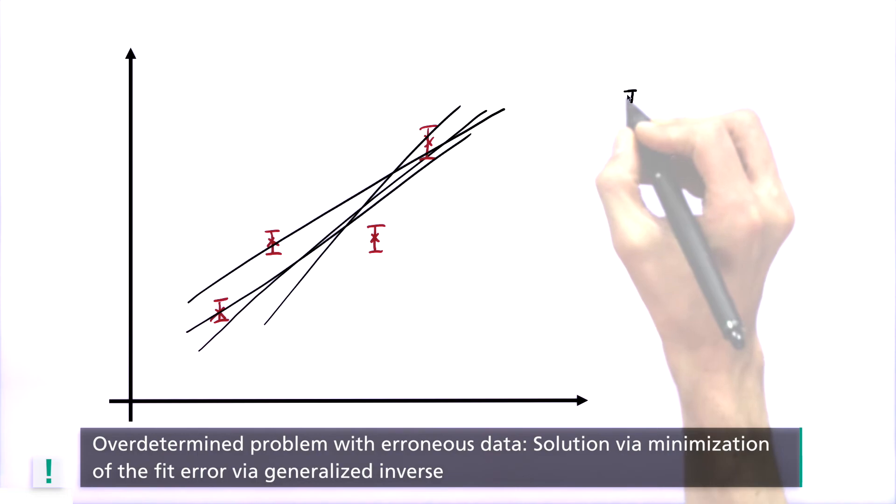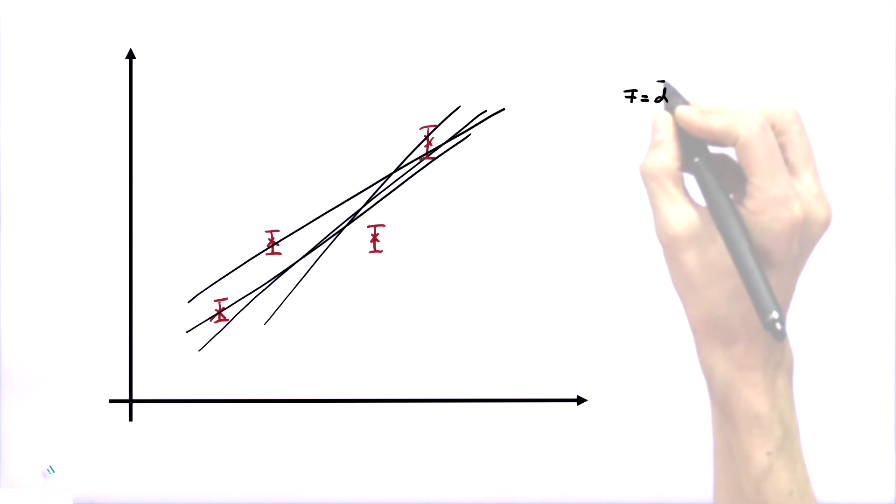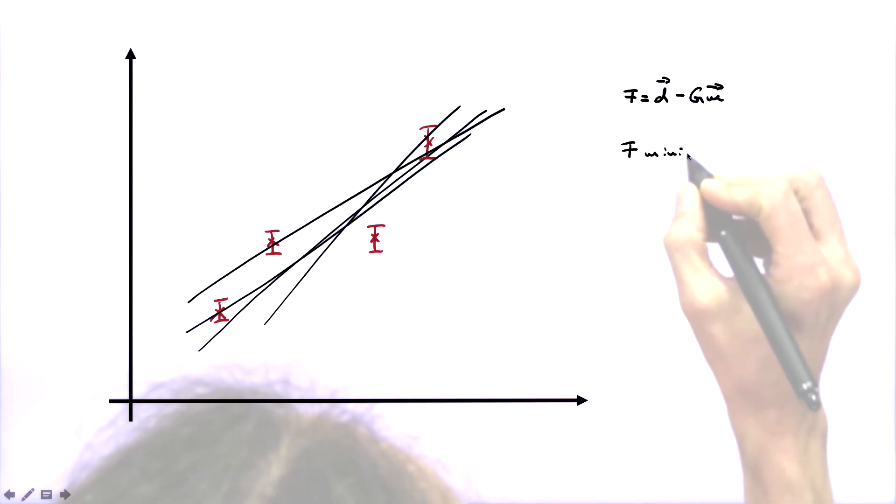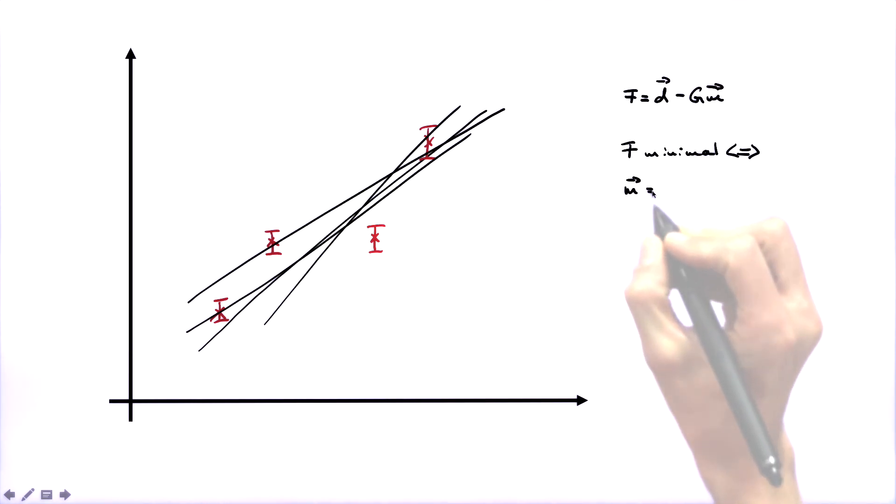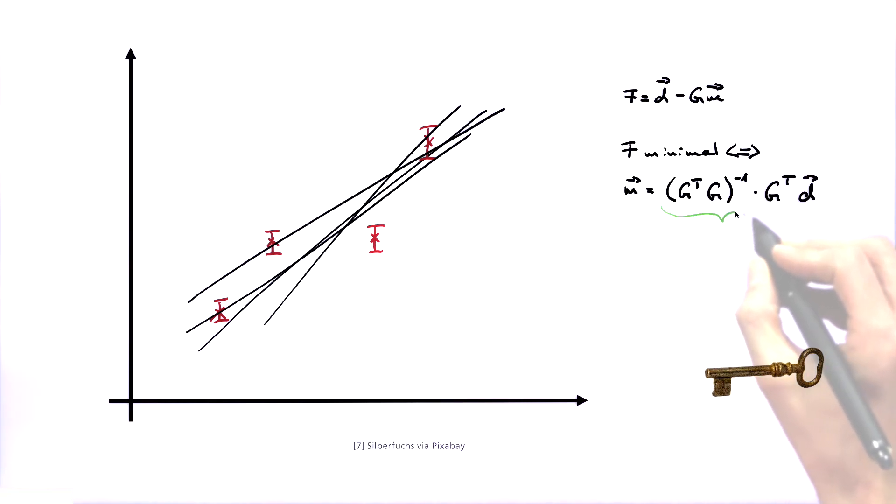In this case, it is important to define a fitting error F that should be as small as possible. F then equals the difference between the measured data D and the forward calculated data G times M. It can be shown that the fitting error F reaches its minimum when the model vector M is equal to the inverse from the product of the transposed matrix GT and G times GT times data vector D. In this case, the product GT times G is now quadratic and hence invertible. The key for inversion is therefore this part here, which is called the generalized inverse.